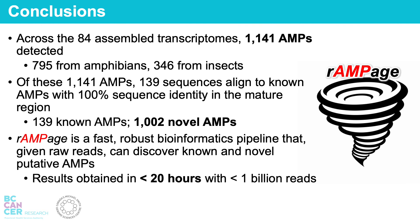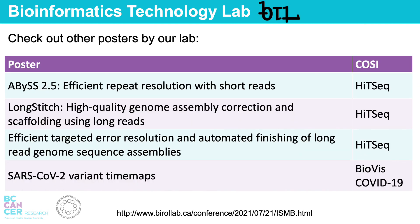To summarize, Rampage was able to find 1,141 AMPs, of which only 139 were previously known. Rampage is a fast, robust bioinformatics pipeline that can discover known and novel putative AMPs in less than 20 hours. Thank you for viewing my poster presentation. Please consider checking out some of the other posters by our lab.